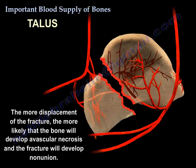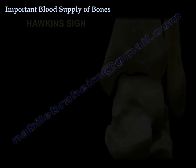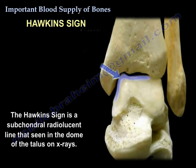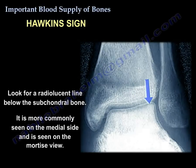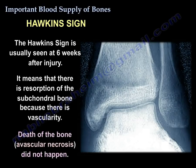The more displacement of the fracture, the more likely the bone will develop avascular necrosis and the fracture will develop non-union. Hawkins sign is a subchondral radiolucent line seen in the dome of the talus on X-rays, more commonly on the medial side on the mortise view, usually six weeks after injury. It means there is resorption of the subchondral bone because vascularity is present — avascular necrosis did not happen.